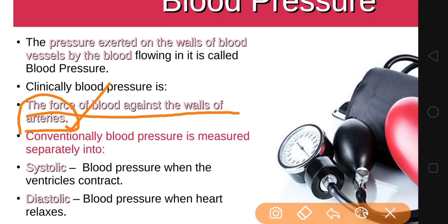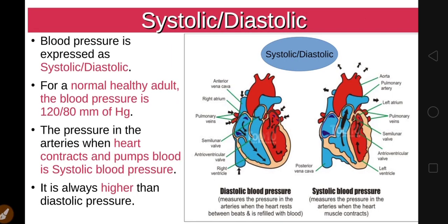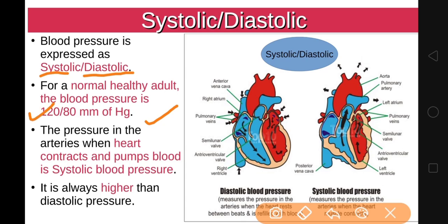Blood pressure is the force of blood against the walls of arteries. Conventionally, blood pressure is measured in two phases expressed as a fraction: the numerator is known as the systolic blood pressure and the denominator is known as the diastolic blood pressure. For a normal healthy adult the blood pressure is 120/80 mmHg — systolic 120 and diastolic 80 mmHg, where mmHg refers to the height of the column of mercury.